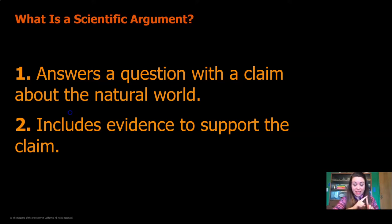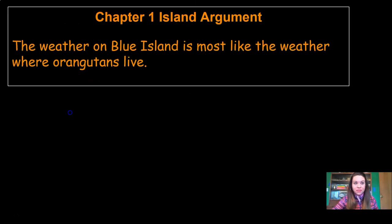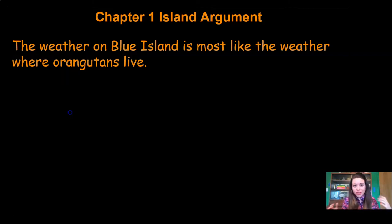Now we've selected a claim — we claim that Blue Island is the best island for the orangutan reserve. And we have evidence to support that claim, so we're ready to make our scientific argument. We're going to write it together using all the evidence that we've collected, compared, evaluated, and sorted. We've done a lot with this evidence, and now we're ready to make a recommendation to the Wildlife Protection Organization.